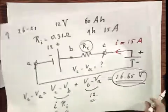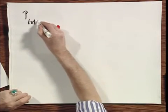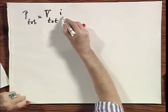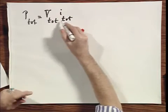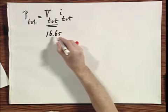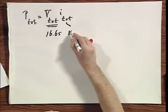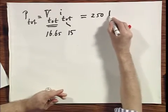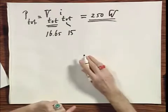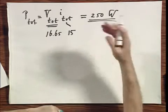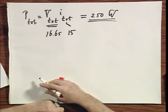What is now the total energy that is supplied during charging? Well during charging, the total energy, the total power I should say, that is supplied is the total voltage that I applied, which is the sixteen point six five times the total power, which is the fifteen. And if I did not make a mistake, I believe this is two hundred and fifty watts, but you better check that.